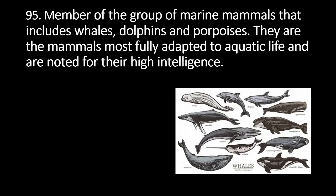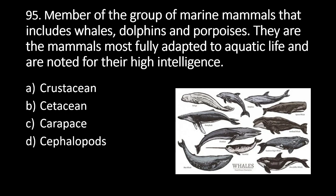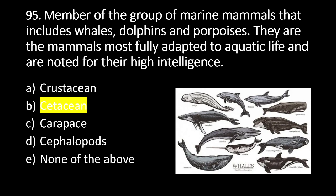Number 95: member of the group of marine animals that includes whales, dolphins, and porpoises. They are the mammals most fully adapted to aquatic life and are noted for their high intelligence. A. Crustaceans, B. Cetaceans, C. Carapace, D. Cephalopods, E. None of the above. The answer is B. Cetaceans. Cetaceans is a group of marine mammals that includes whales, dolphins, and porpoises.